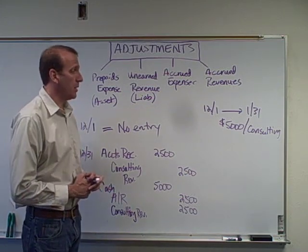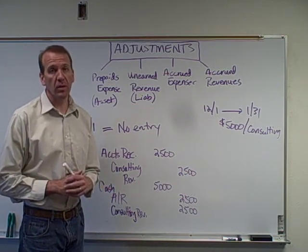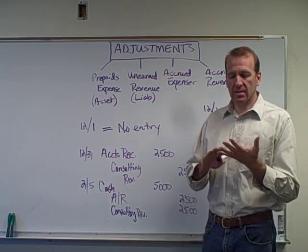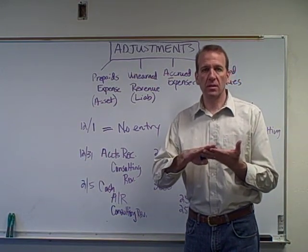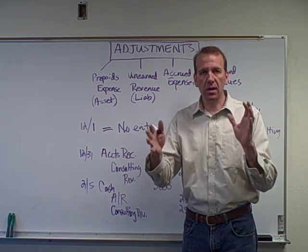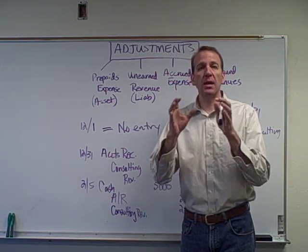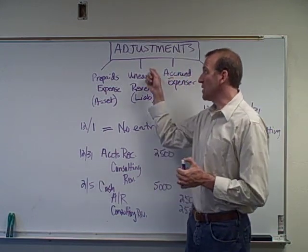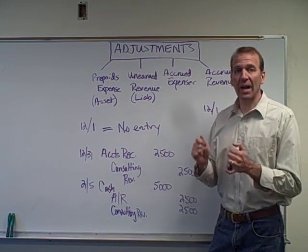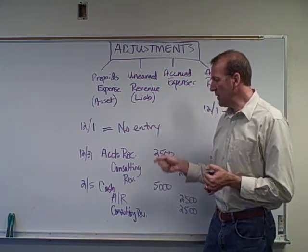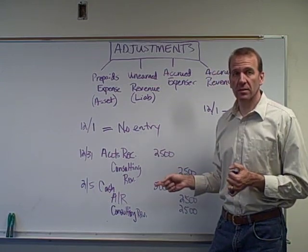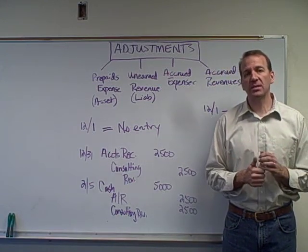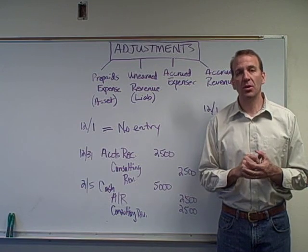That's an example of an accrued revenue. These adjustments are complicated — you have to understand assets and liabilities, revenues and expenses, and time periods. The whole point of accrual basis accounting is to recognize revenues and expenses in the right time periods, and that's what these adjustments are doing. Make sure you're spending plenty of time going over this material. The textbooks have some really good examples. Good luck with adjustments!